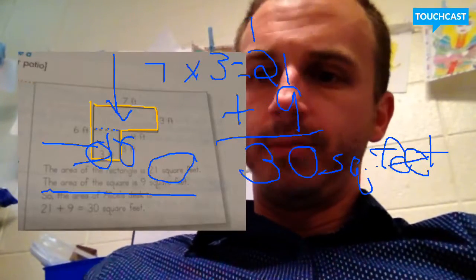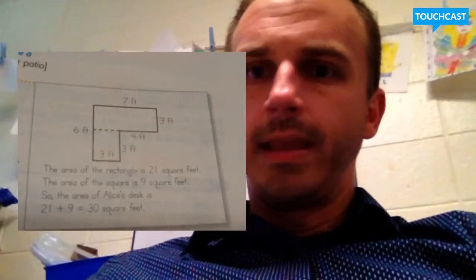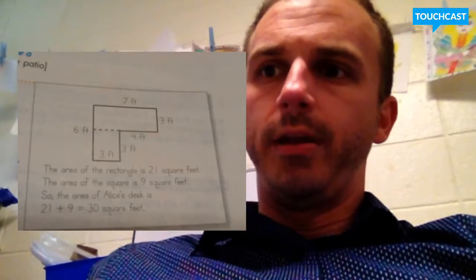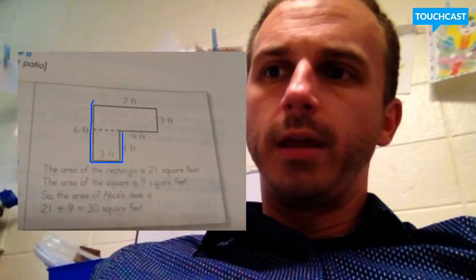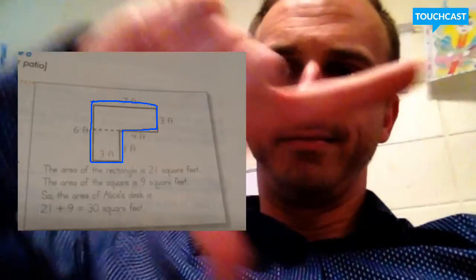Because if you can combine them, let me see if I can clear this page. So now you can see a little bit better. Now you see the irregular shape that we had before was like an L or kind of like a gun.